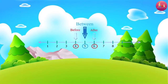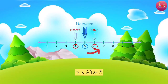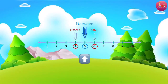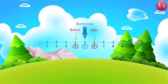Number 5: 4 is before 5, 6 is after 5, 5 is between 4 and 6. What comes before 5? 4.